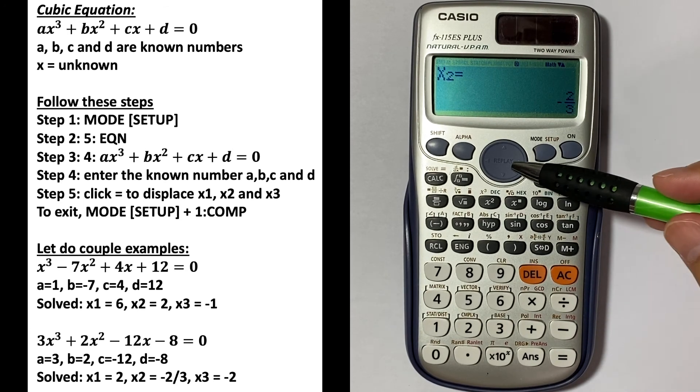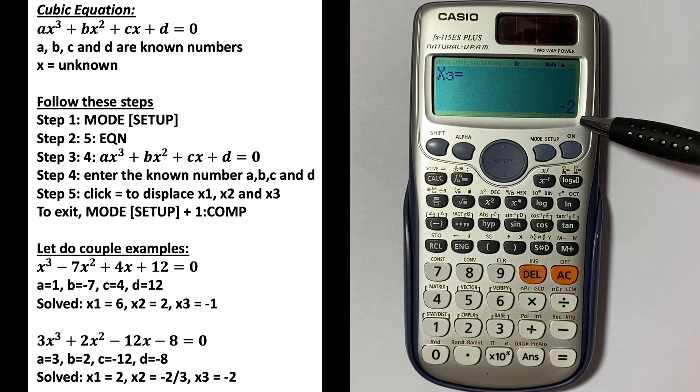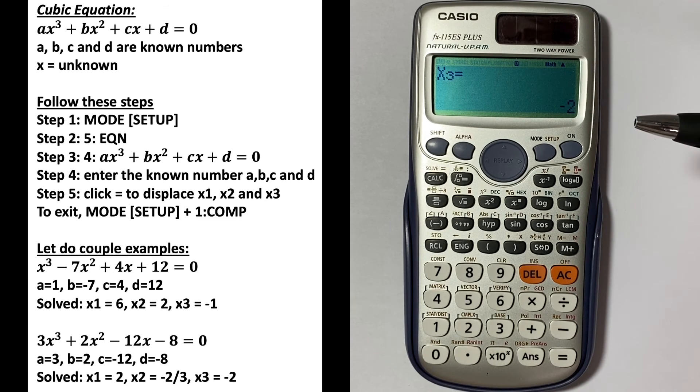Then you get x2 = -2/3, and x3 = -2. Here you go, you have the unknowns solved using the cubic equation in the calculator.